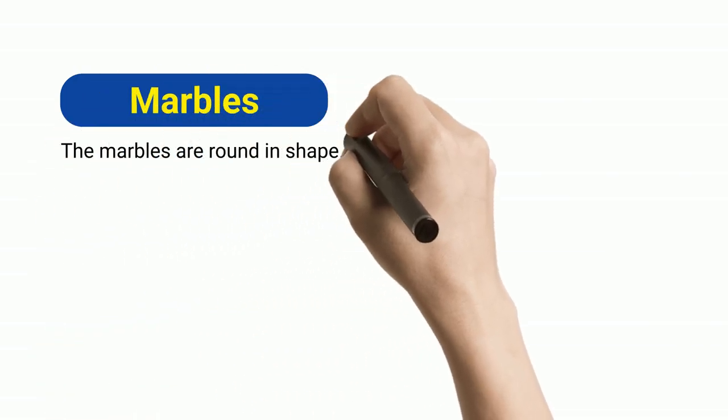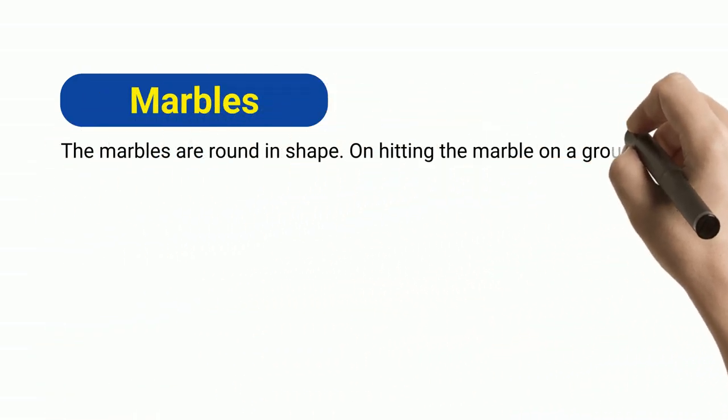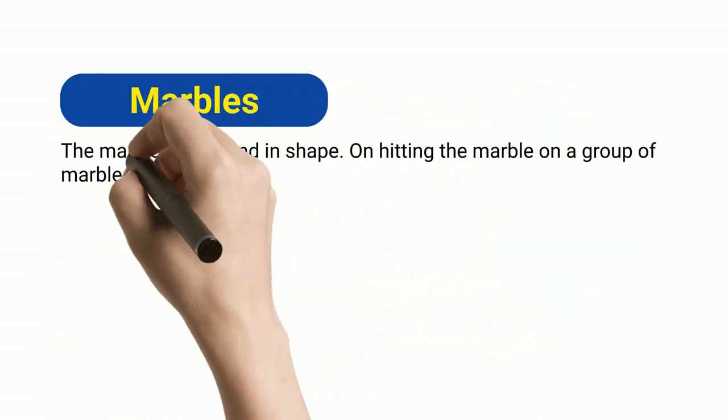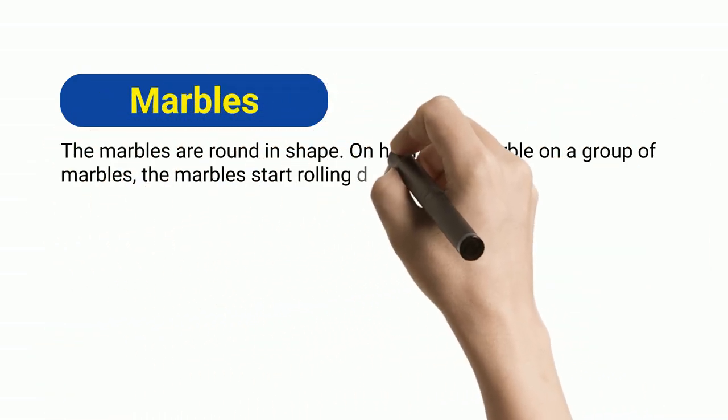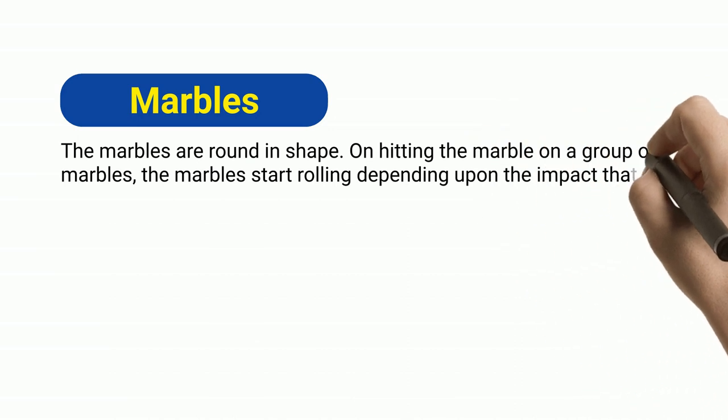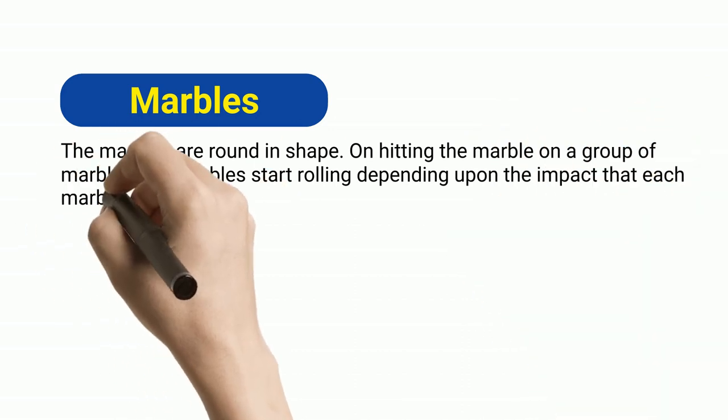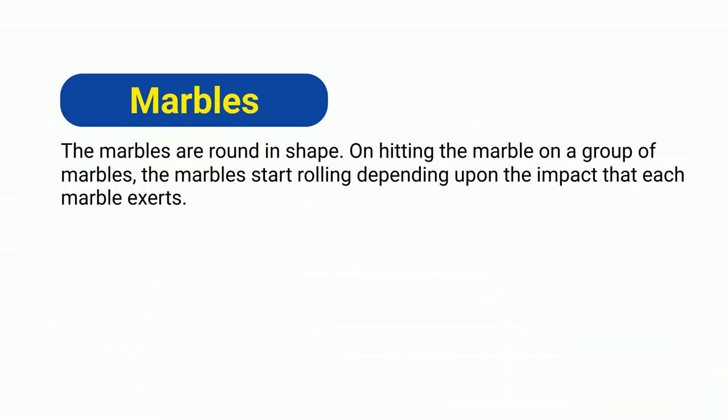Marbles. The marbles are round in shape. On hitting the marble on a group of marbles, the marbles start rolling depending upon the impact that each marble exerts.